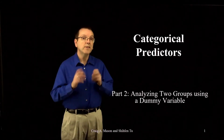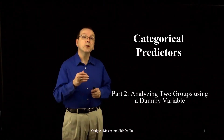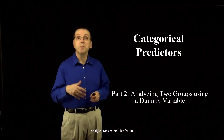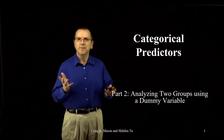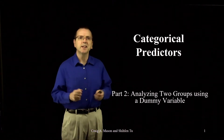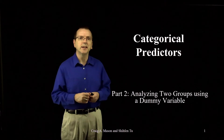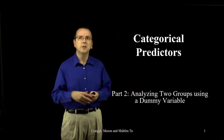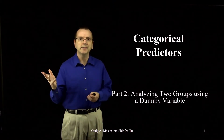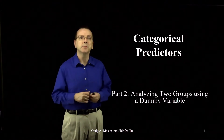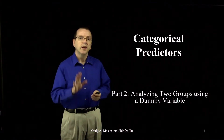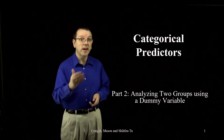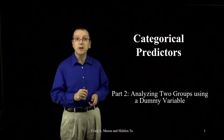In our previous video we used an independent samples t-test to compare PACER scores, a physical fitness test measuring aerobic capacity, for two groups of students: those with asthma and those without asthma. In this video we're going to see how we can do the same analysis in multiple regression.